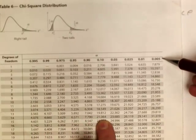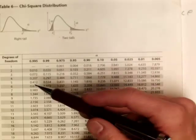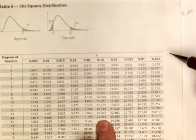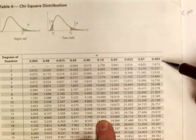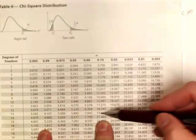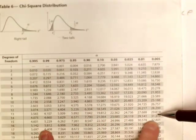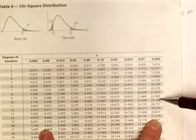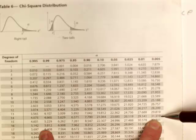The areas to the right of the critical value are along the top of the table and the degrees of freedom are in the first column. I read across for 14 degrees of freedom and down from .005, and I get a critical value of 31.319.